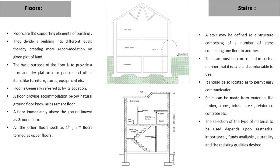Coming to the floor — floor is also known as a horizontal member. It is a flat supporting element of the building. It divides a building into different levels, thereby creating more accommodation on the given plot of land. A floor providing accommodation below natural ground level is known as basement. Just above that is ground floor, and above ground floor are known as upper floors.